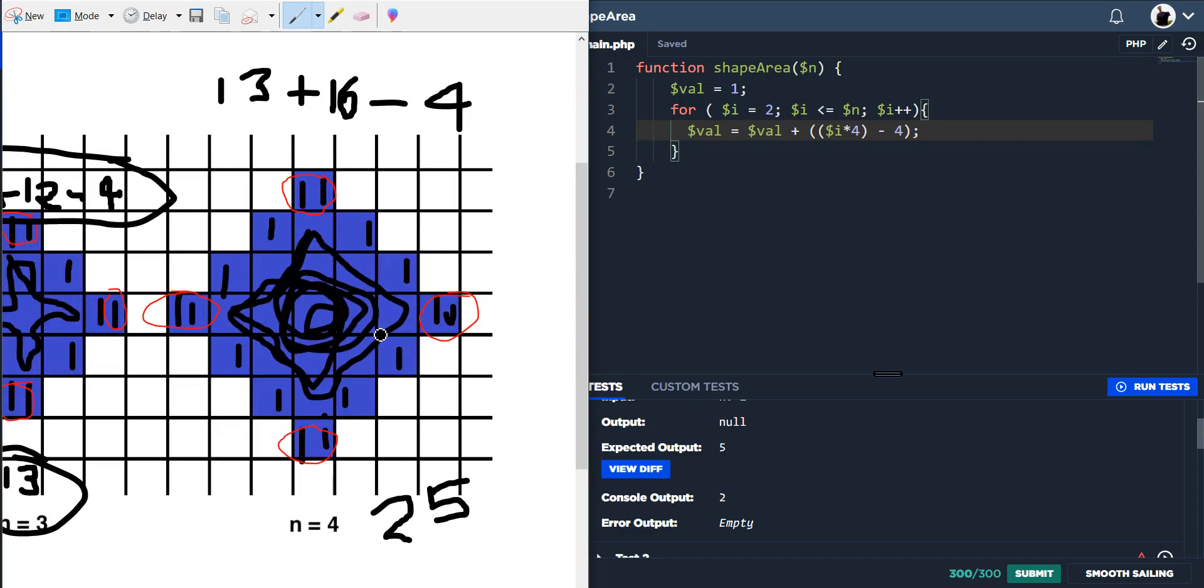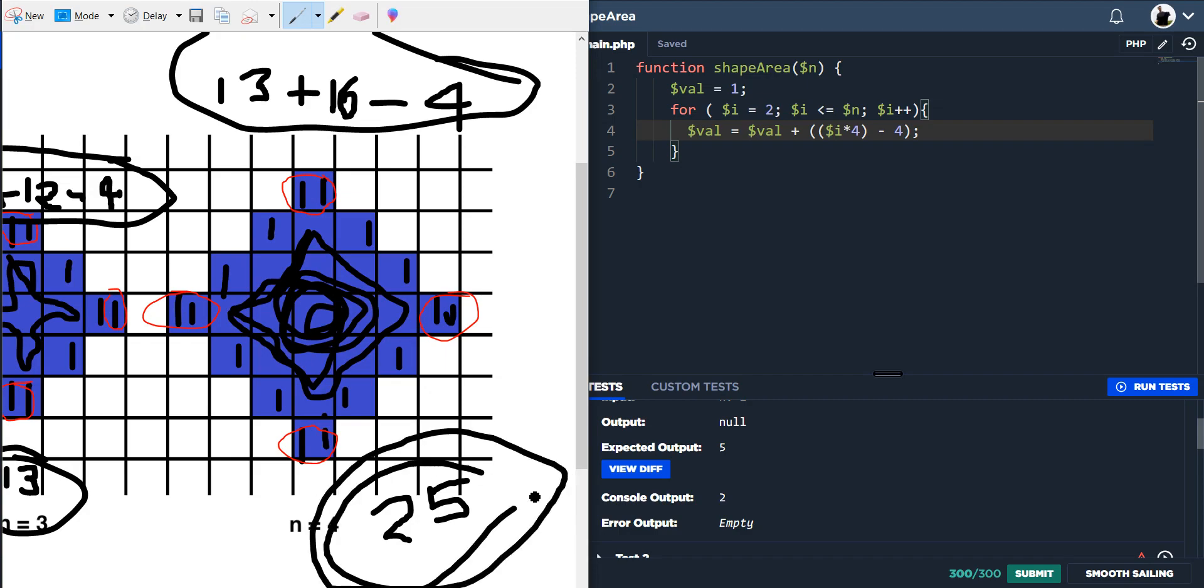That will give us our new value of 13. And if we go to the next one, our new value is now 13. So we've got 13 plus i times 4, which would be 4 times 4, 16 minus the 4, exactly the same. And then that will give us our answer of 25.